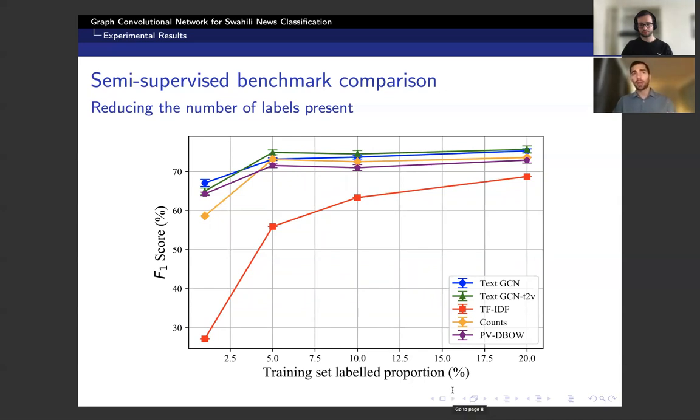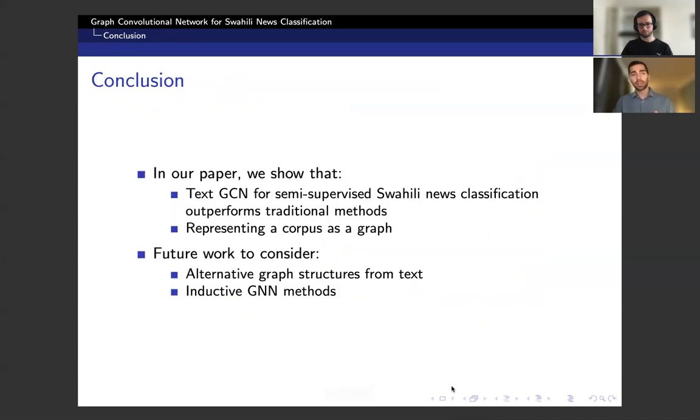The counts model, which previously performed relatively well, has a noticeable degradation in performance as the number of training labels is decreased. In conclusion, in our paper, we implement two versions of a text-GCN model for semi-supervised Swahili news classification. We find that these models outperform a variety of traditional methods, especially when only a small number of labels are used. This work also demonstrates the implicit graph nature of a corpus, which is exploited by the text-GCN model and is an interesting direction for other document classification tasks.